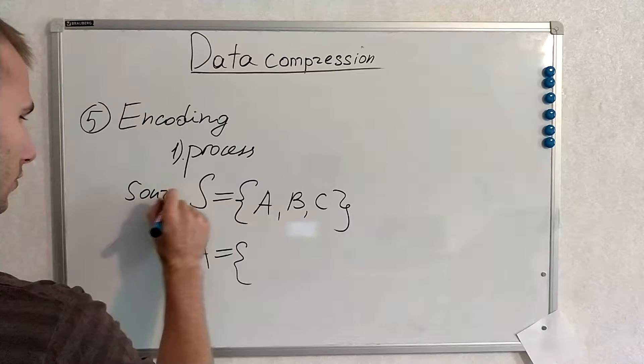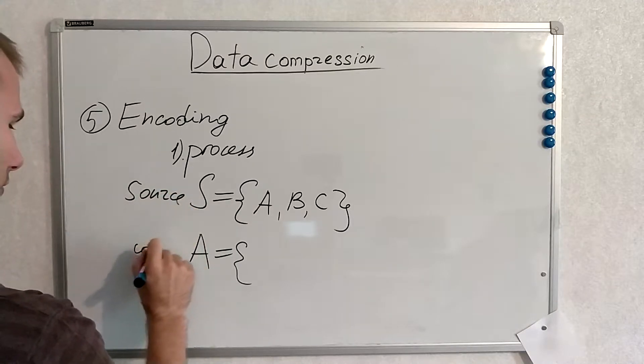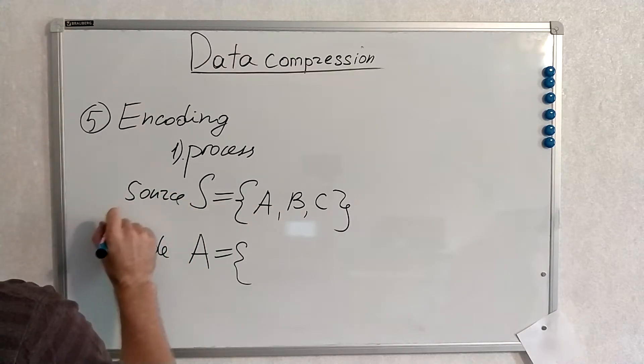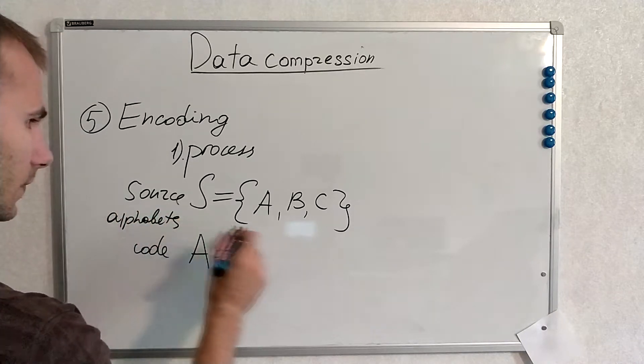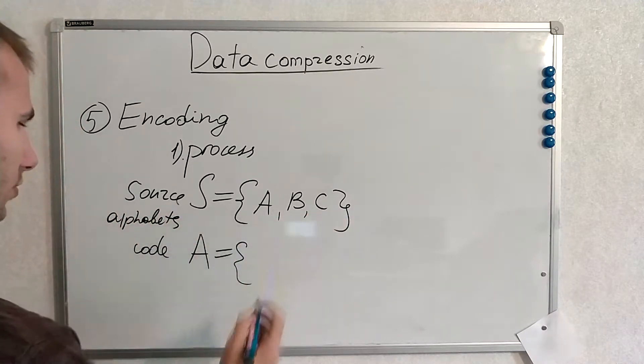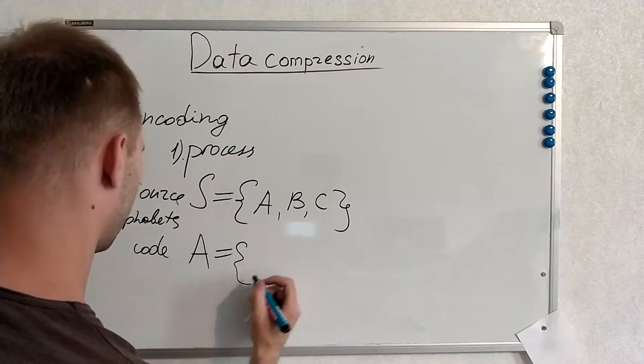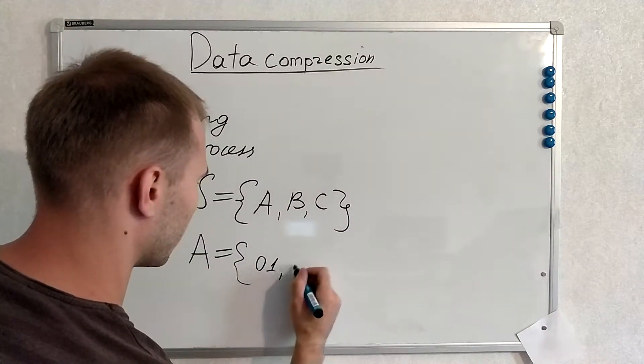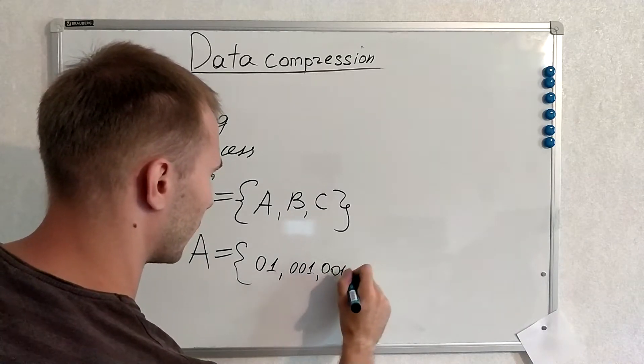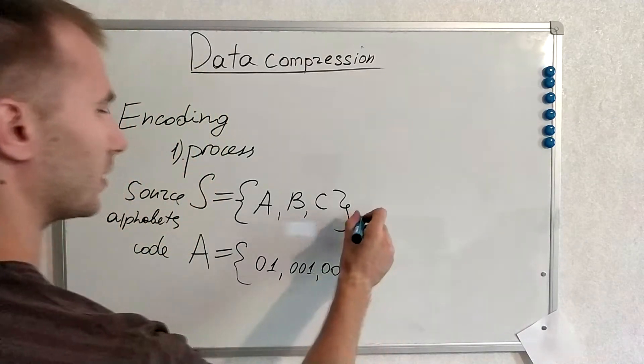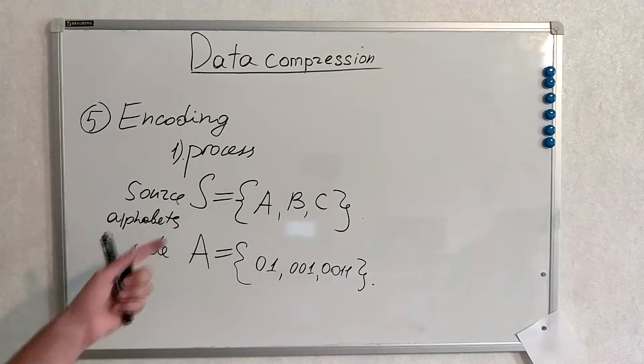And A is our code. This is source, code, code alphabets. So A B C is our source alphabet and code alphabet will be 0 1 0 0 1 0 0 1 1. This is absolutely arbitrary chosen source and code alphabets.